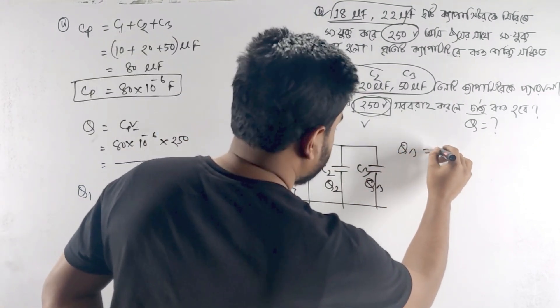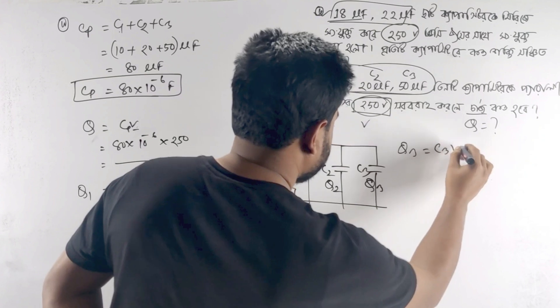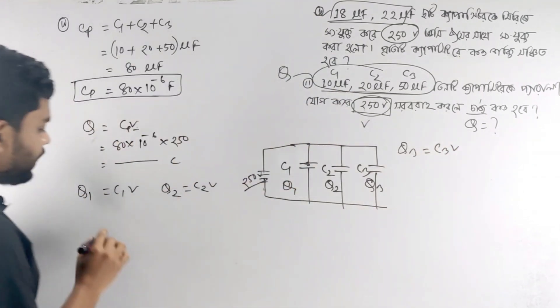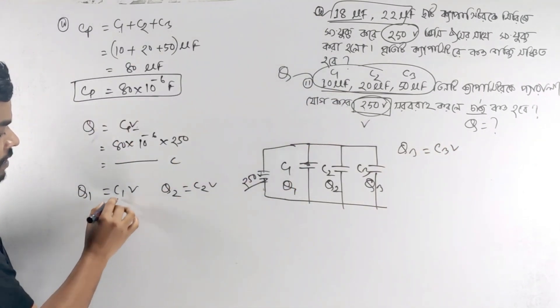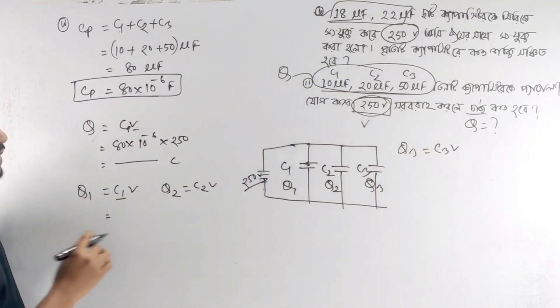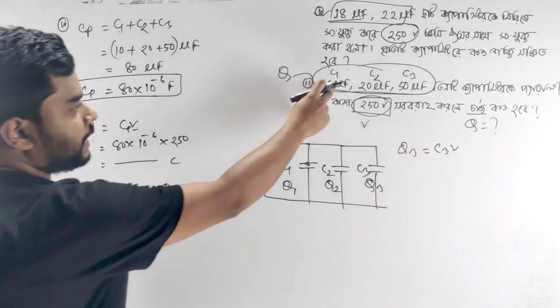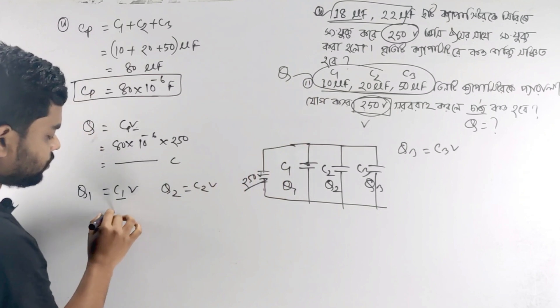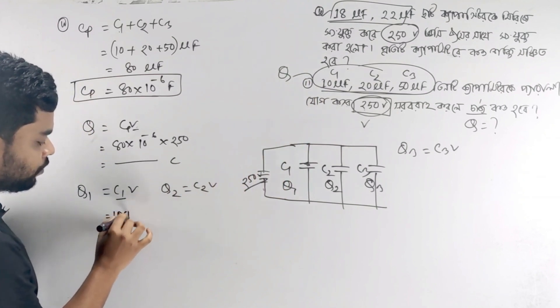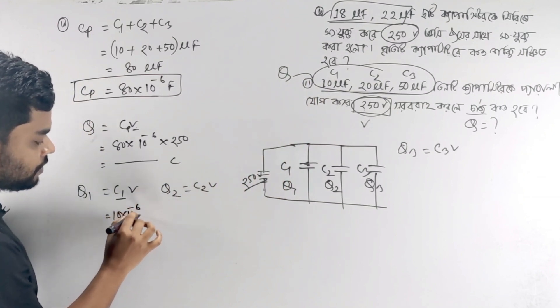C1 is equal to C3 into V. So let's see — C1 is equal to 10 µF. We'll see 10 µF.